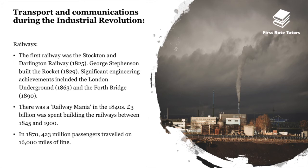The first railway was the Stockton and Darlington Railway in 1825. George Stephenson then built the Rocket in 1829. Significant engineering achievements included the London Underground in 1863 and the Forth Bridge in 1890. There was a Railway Mania in the 1840s, and three billion pounds were spent building the railways between 1845 and 1900. By 1870, 423 million passengers travelled on 16,000 miles of line.